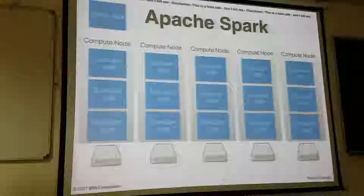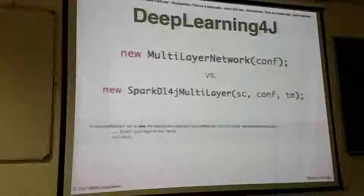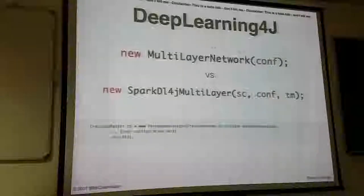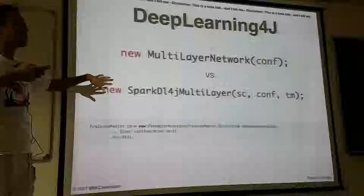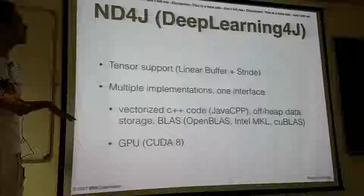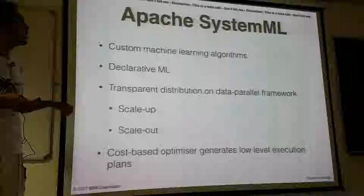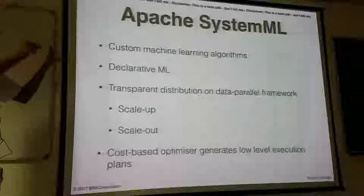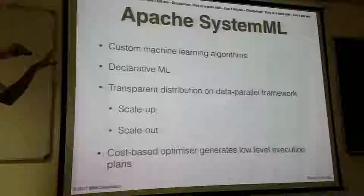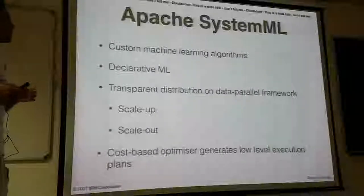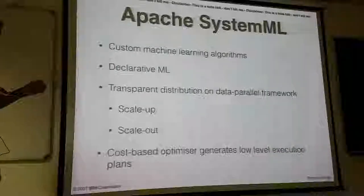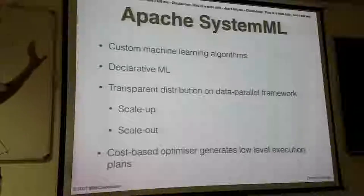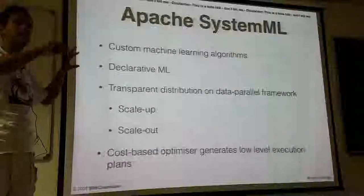Moving on to Apache Spark — it's not so relevant for understanding, just an example of how this is done in different frameworks. There's a framework called Deep Learning for Java where it's just one line of code to parallelize it in Apache Spark. There's also TensorFlow IBM — SystemML at systemml.apache.org — which uses Java as execution over C++ and creates a cost-based dynamic execution graph.